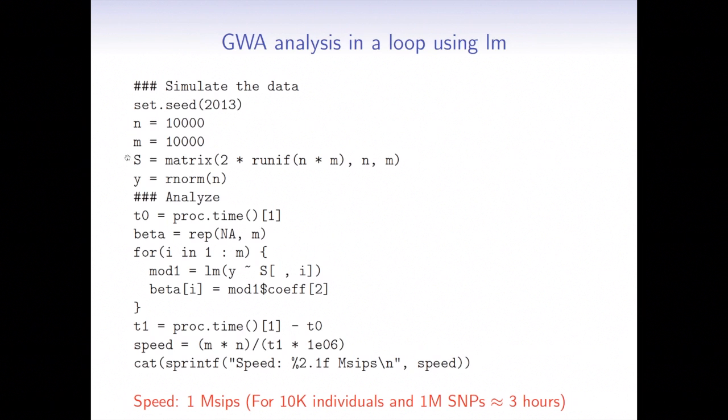Here I want to measure time. I pre-specify my vector of betas, and then in a loop for each SNP at a time I fit the lm model, and I save my beta in a vector. And then we measured the speed.